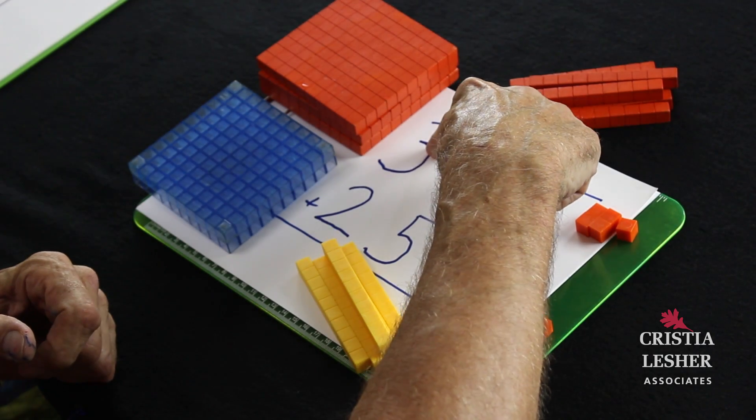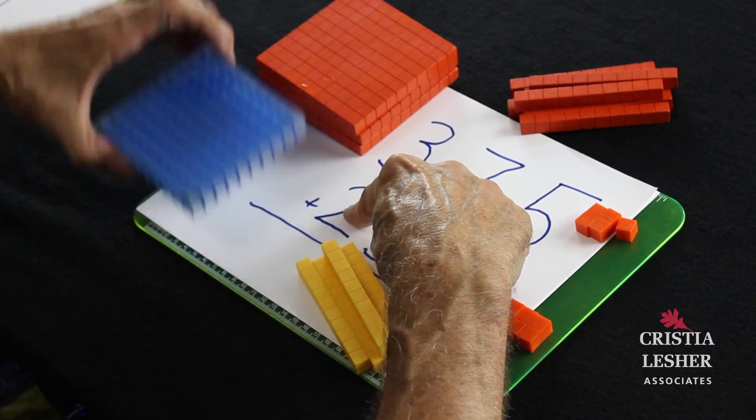I'm going to start adding on the left side because I know that stands for 300 and this is 200, and that makes 500 altogether.